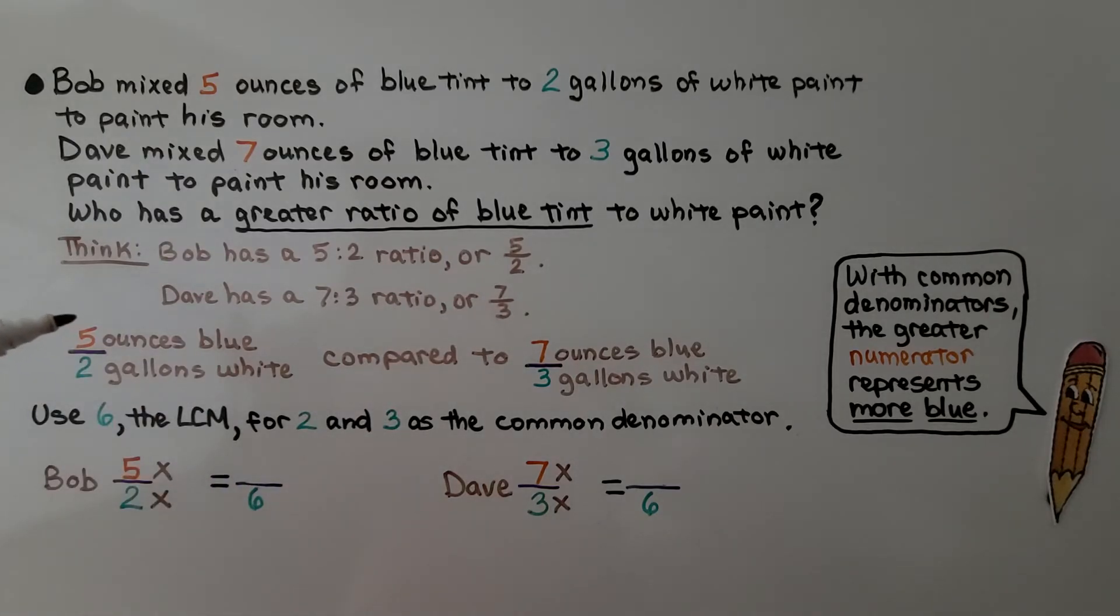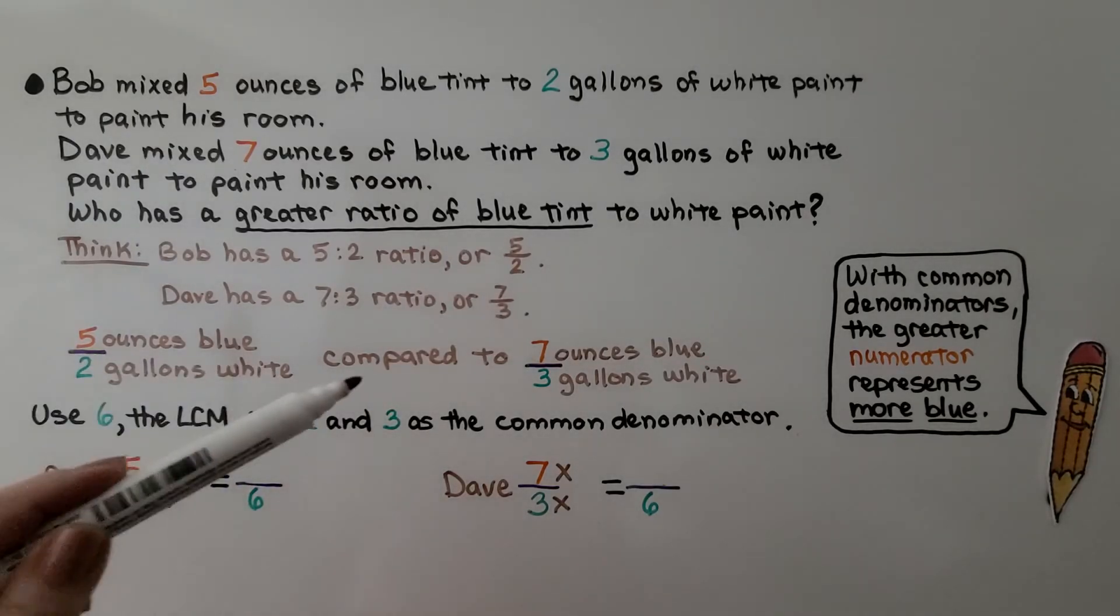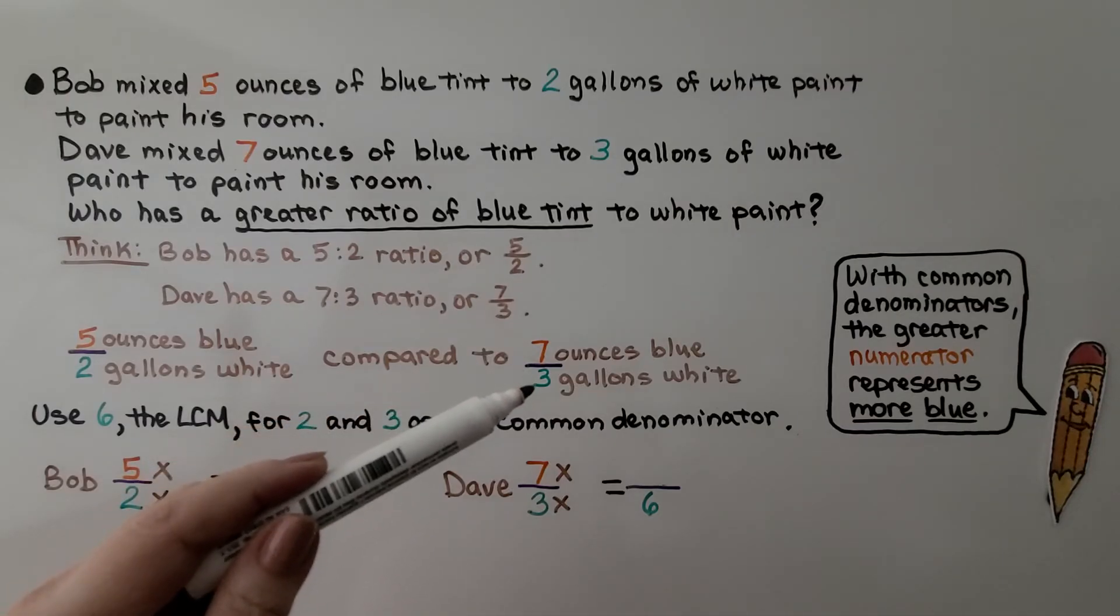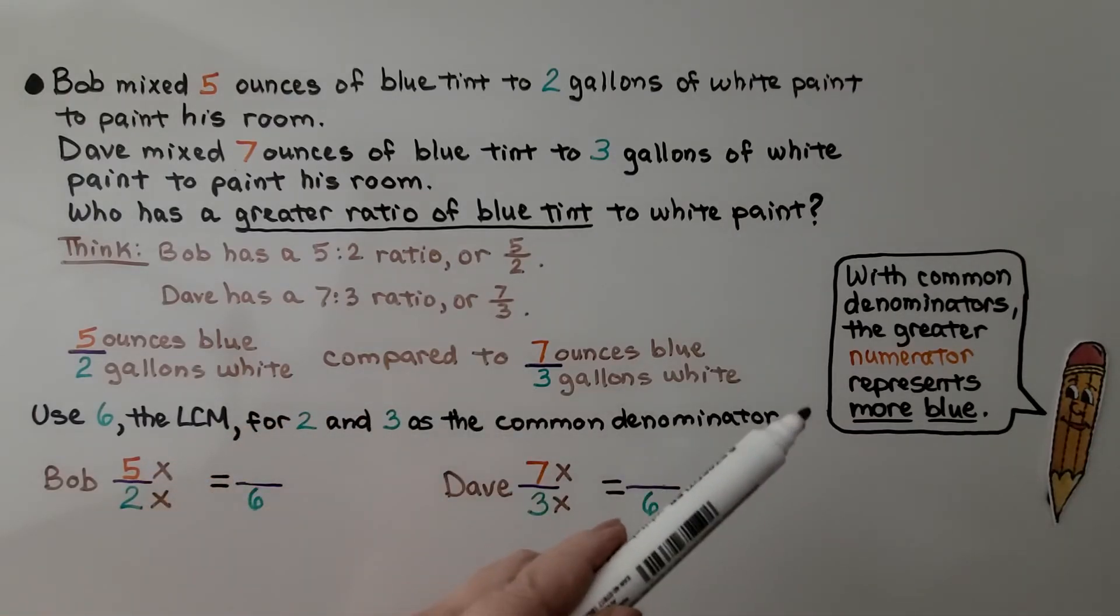That's, for Bob, 5 ounces blue to 2 gallons white compared to Dave's 7 ounces of blue to 3 gallons of white. With a common denominator, the greater numerator represents more blue. So we need to give them a common denominator. And we can use 6, the least common multiple for 2 and 3, as the common denominator.